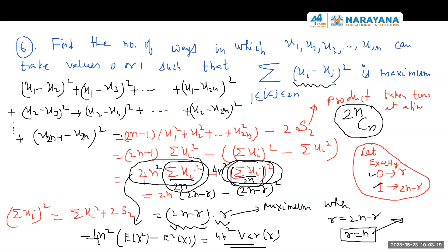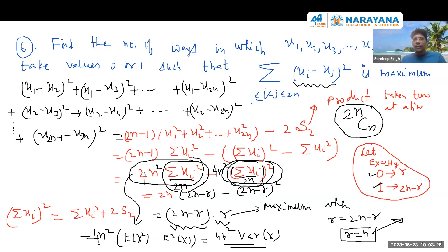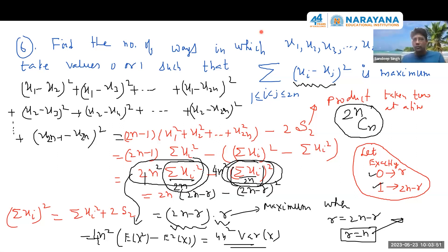A student asks whether properties of triangle are in the JEE Advanced syllabus. The instructor clarifies: they have not specifically listed it, so direct problems on properties of triangle are unlikely. However, basic sine law and cosine law can always appear, especially in coordinate geometry problems. See you in the next class.